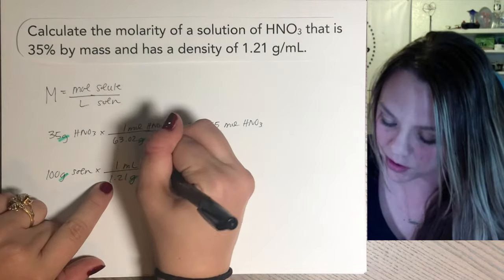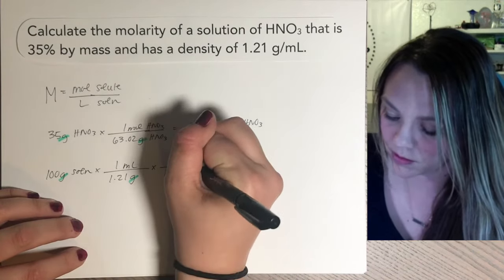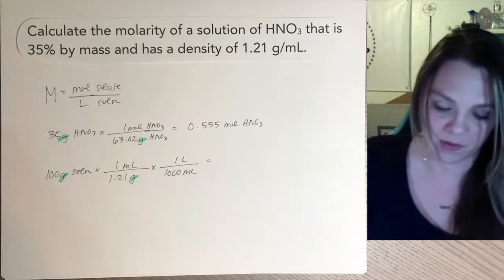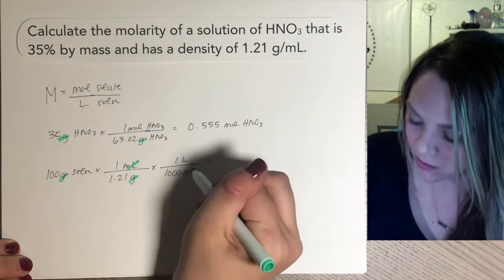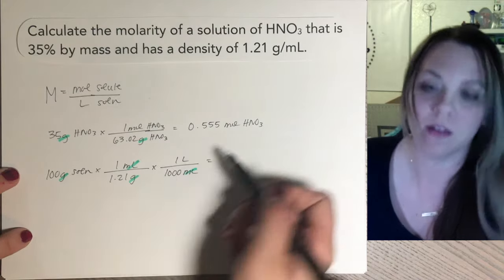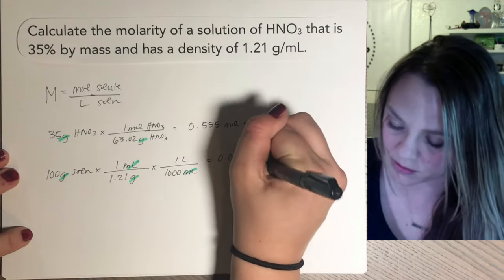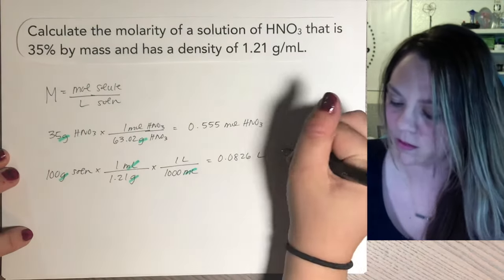So now I have milliliters of solution. I don't want milliliters. I want liters. So a thousand mils is one liter. Milliliter and milliliter cancel. And then you do some math and you find out this is 0.0826 liters of solution.